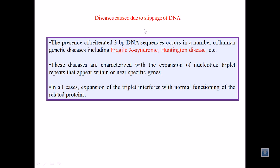The presence of repeated three base pair DNA sequences that create slippage DNA can cause a number of human genetic diseases, including Fragile X Syndrome and Huntington's Disease. These diseases are characterized by the expansion of nucleotide triplet repeats within or near specific genes. While slippage DNA is not always beneficial, it can incorporate new mutations and variations that help cells maintain themselves in an evolutionary context.